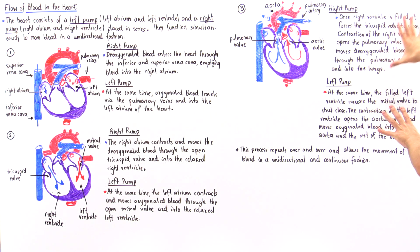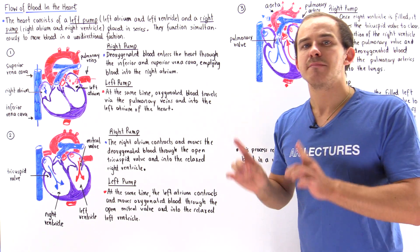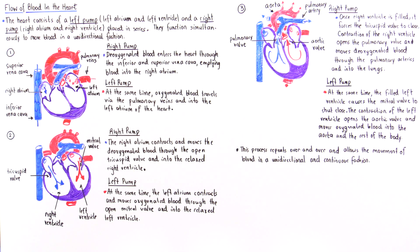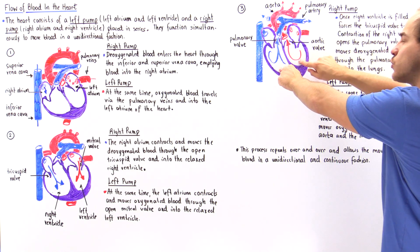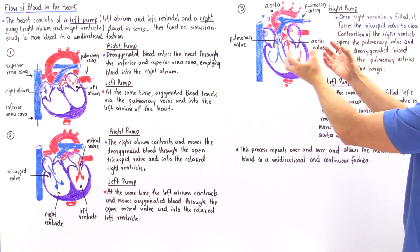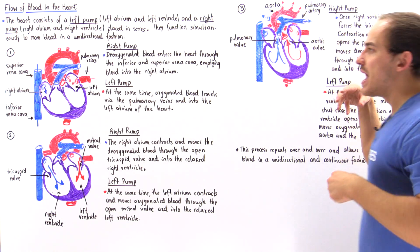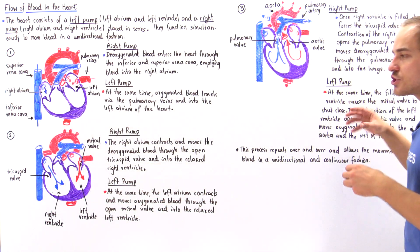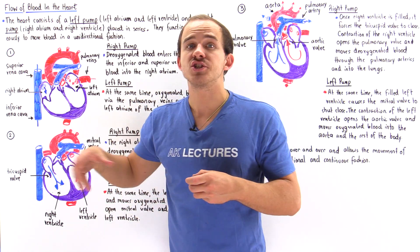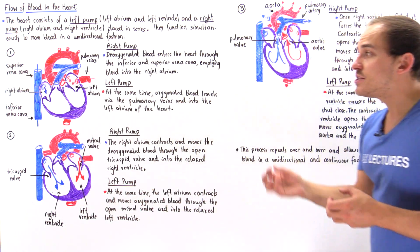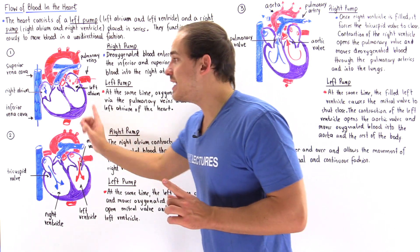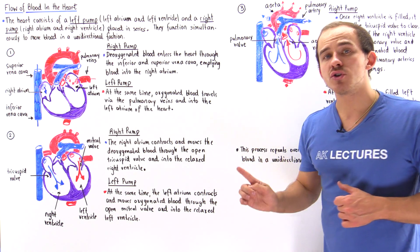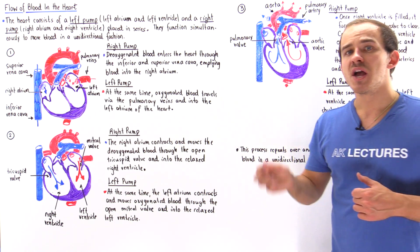Both the right and left ventricles contract simultaneously. These three stages repeat over and over, creating a unidirectional and continuous flow of blood not only inside the four chambers of the heart but throughout the entire cardiovascular system of the body.